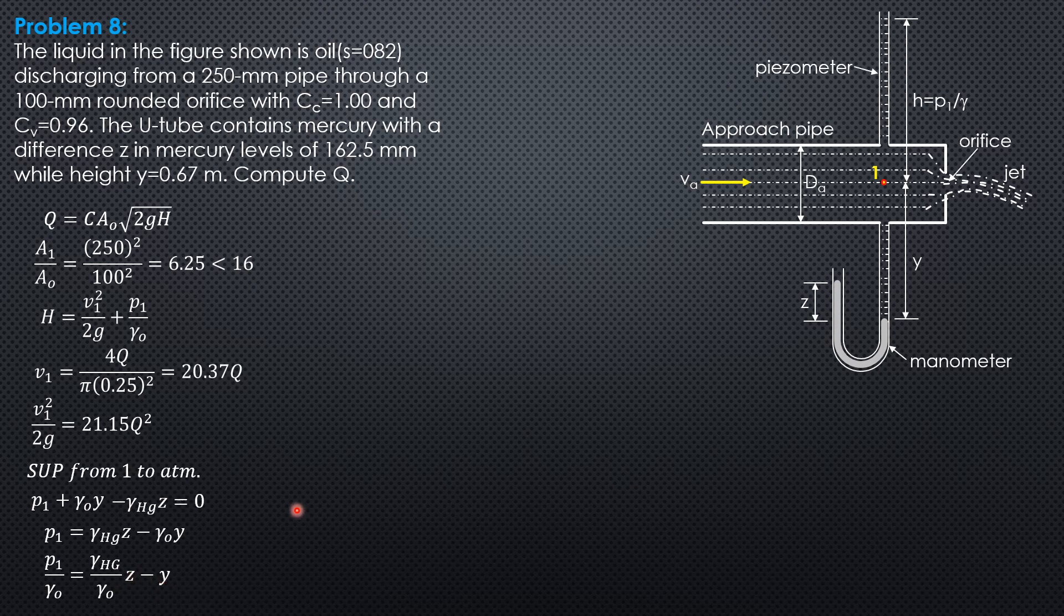Specific weight of mercury is specific gravity 13.6 times γ_water, while γ_oil is specific gravity of oil times γ_water. Pressure head at point 1 in terms of oil is 13.6γ_water/(0.82γ_water) times z, which is 0.1625, minus y, which is 0.67. Cancel out γ_water, then the pressure head at point 1 equals 2.025 meters of oil.